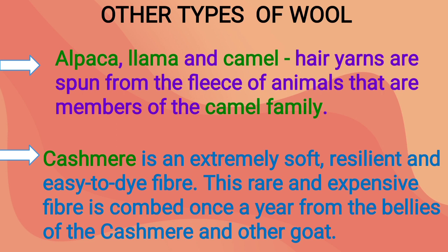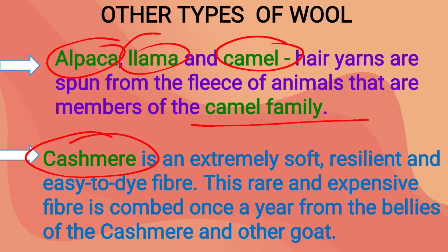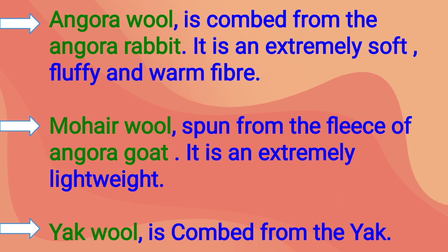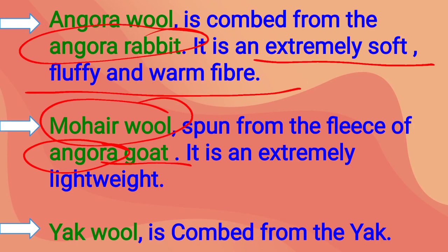Other than sheep, many animals also provide wool. Alpaca and llama belong to the camel family and give very good quality hair. Cashmere wool comes from the cashmere goat and is rare and expensive. Angora wool is combed from the angora rabbit and is extremely soft and fluffy. Mohair wool is obtained from the angora goat. Yak wool is obtained from yak.